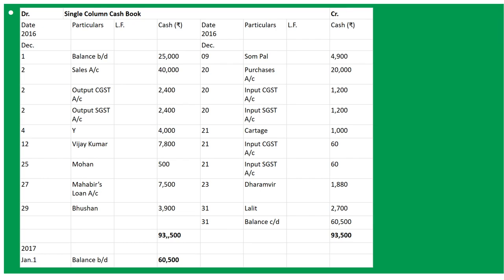December 2nd: 'To Output CGST Account' 2,400 and 'To Output SGST Account' 2,400 - that will be 6% of 40,000 each. On December 4th, received from X on behalf of Y, rupees 4,000. Here we will write 'To Y's Account' 4,000.